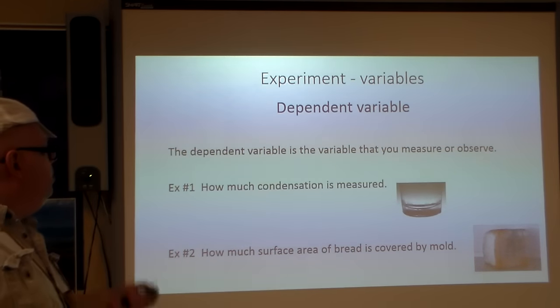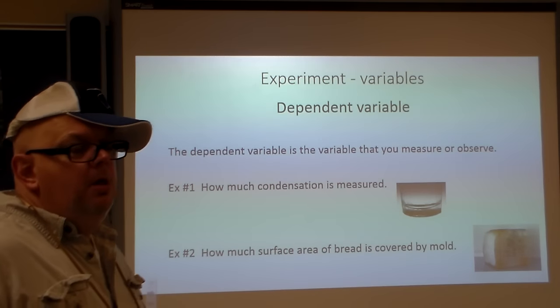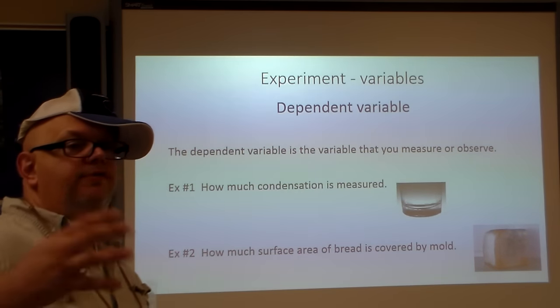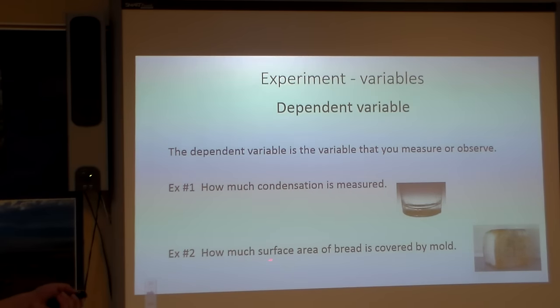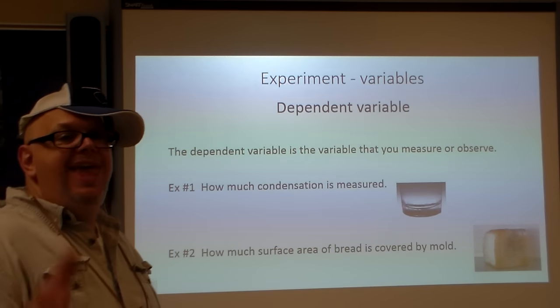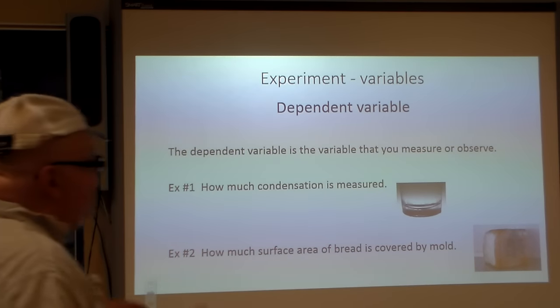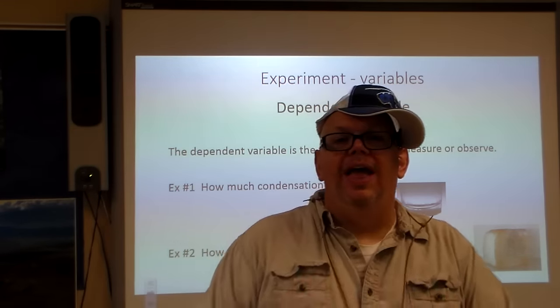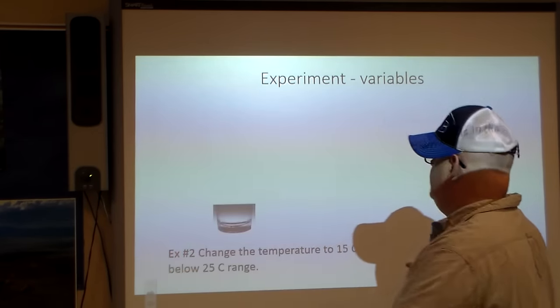That's your dependent variable. Can I afford to buy this car? Yes or no? That's my dependent variable. So here, we look at how much condensation is measured. That's our dependent variable, because that's how we're going to find out if our hypothesis works or not. In the second one, how much surface area of the bread is covered by mold. That's there. We don't control it. That's part of the experimentation process.